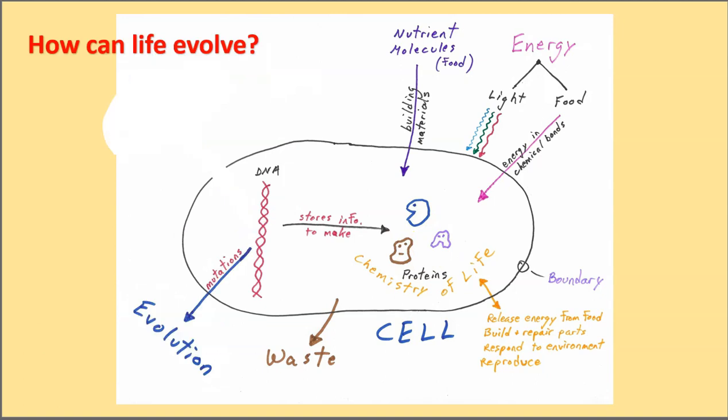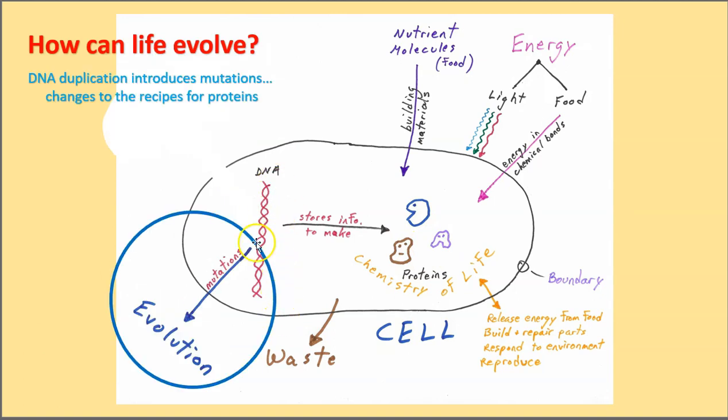How can life evolve? Well, because when DNA gets duplicated, sometimes mistakes happen. We call them mutations. That means that the two daughter cells might be different from the parent and different from each other. And this gives rise to the possibility that living things can change over time in a process we will be calling evolution.